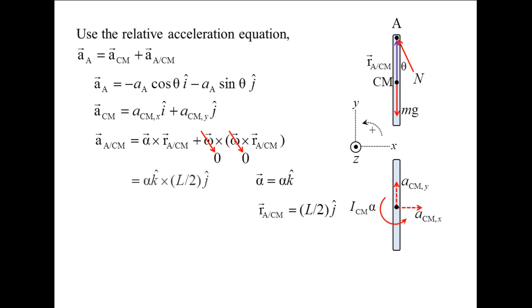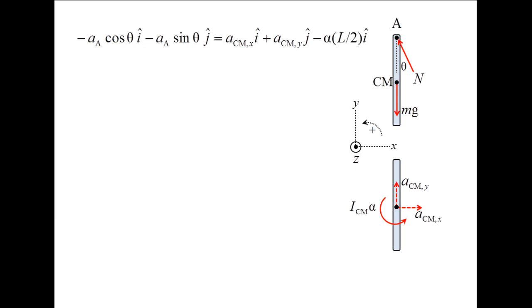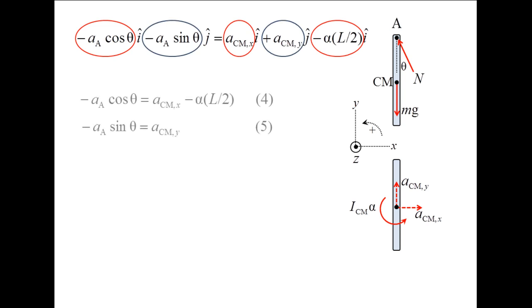Take the cross product of alpha and RACM and plug in the expressions for the accelerations. Equating the x terms and the y terms, we obtain two additional equations.